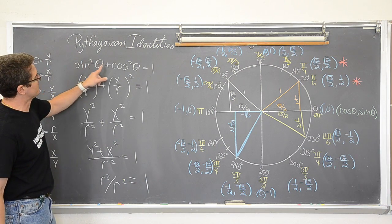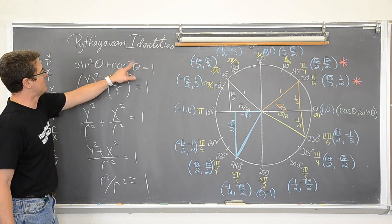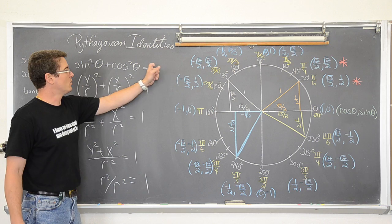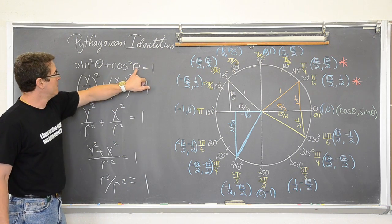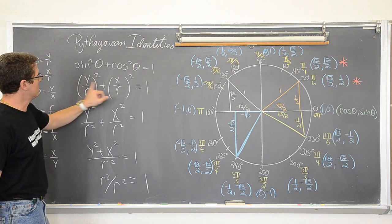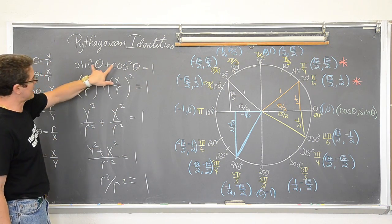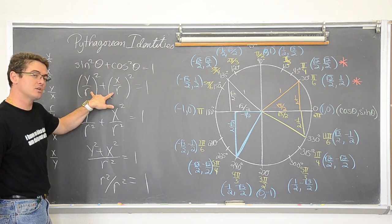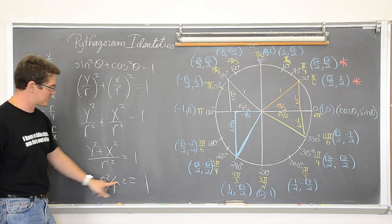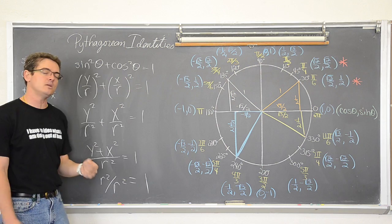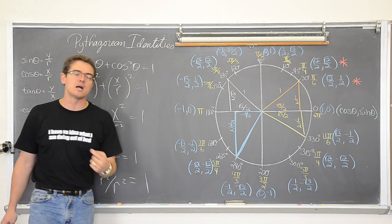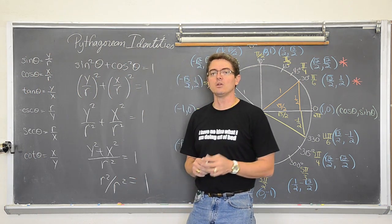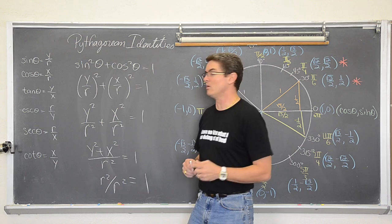There is your proof. Sine squared plus cosine squared of matching angle measures — theta, or beta, or whatever you want to call it — will always equal one no matter what the angle measure is. Because I used generic ratios of y over r and x over r, I have shown that yes indeed we have one equals one. Sine squared plus cosine squared will always equal one.